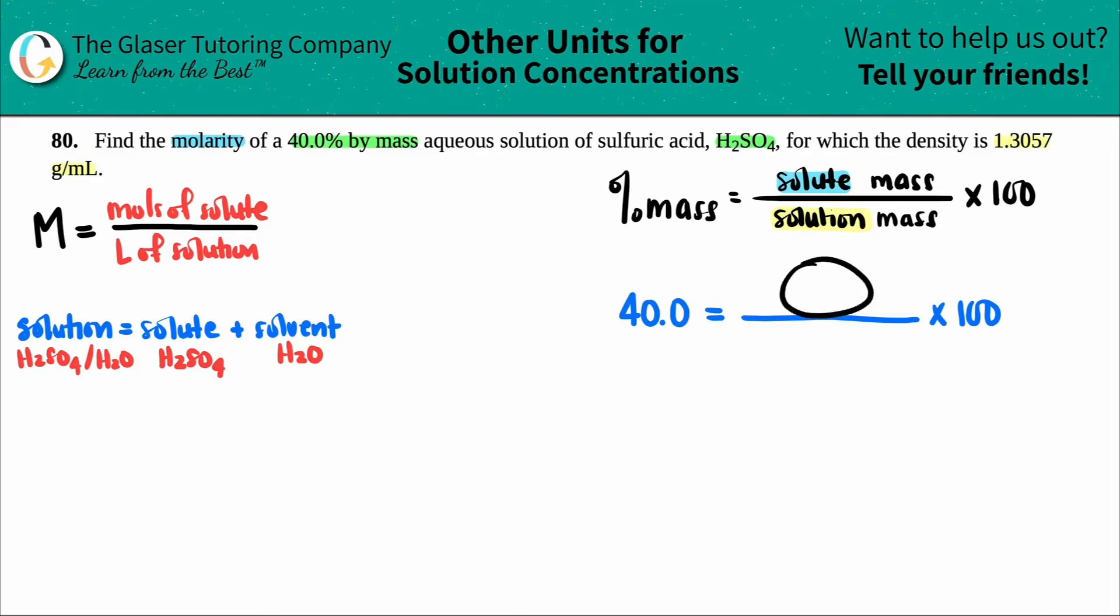I got 40.0 equals something over something times 100. Maybe I could put numbers in the top and the bottom so that this equals 40. I technically don't want the 100, so I need a 100 in the denominator to cancel it out. What's the number that's going to be here to make it equal to 40? It's literally 40. Now I have all of the numbers.